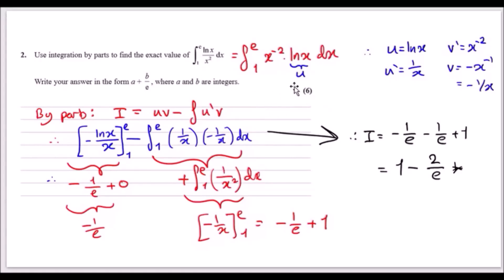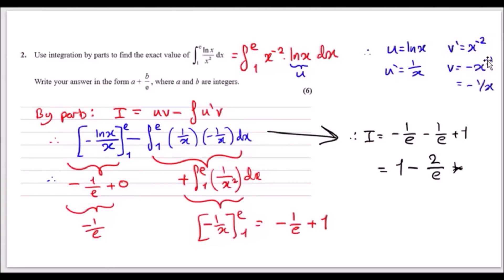Never let ln(x) be v′ because it's very hard to integrate. Always let the natural log be u, and let the other term be v′. So u = ln(x), giving u′ = 1/x, and v′ = x⁻², integrating to give v = −x⁻¹, or −1/x. The general formula for integration by parts is uv minus the integral of u′v.